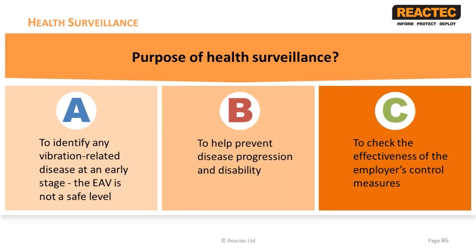The purpose of health surveillance is about having procedures to detect work-related ill health at an early stage and acting on the results. The main aims are to safeguard the health of employees, including identifying and protecting people at increased risk, and also to check the long-term effectiveness of control measures.